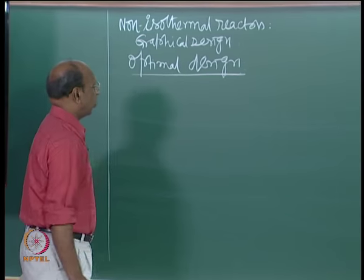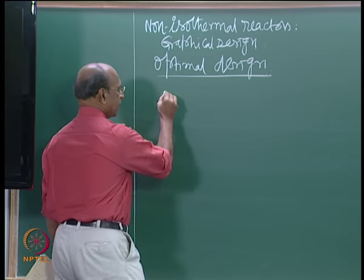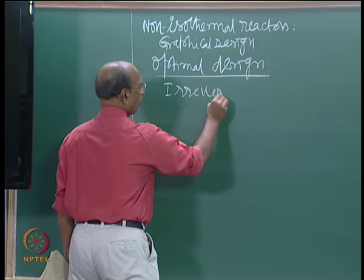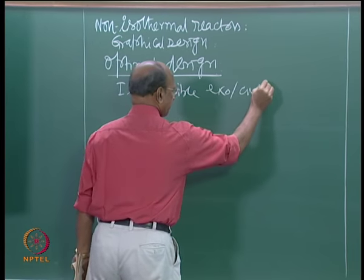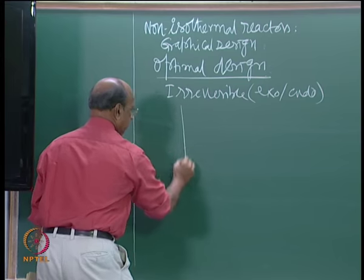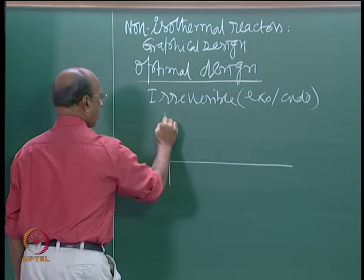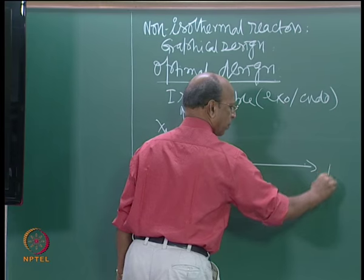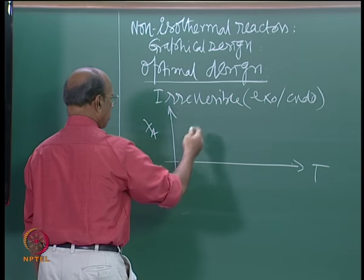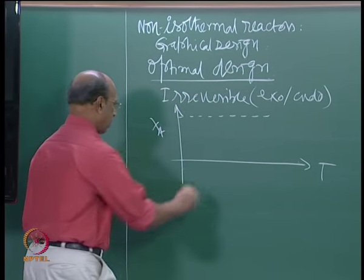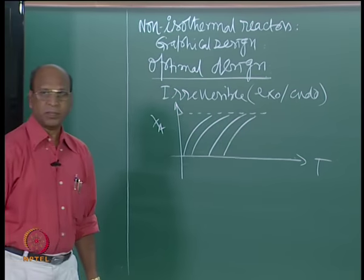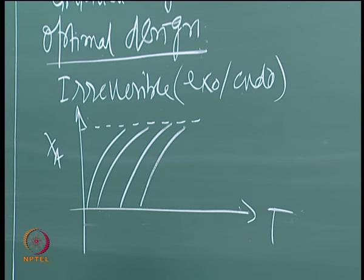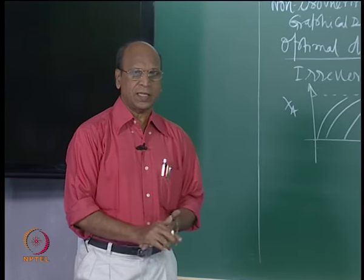Now, optimal design — what we discuss is: if it is irreversible, exothermic or endothermic, what is the optimization here? I have here X_A versus T graphs. For irreversible reactions, you know what kind of graphs you get — like this. How do I use this information for getting minimum volume for a given conversion? What is the strategy?